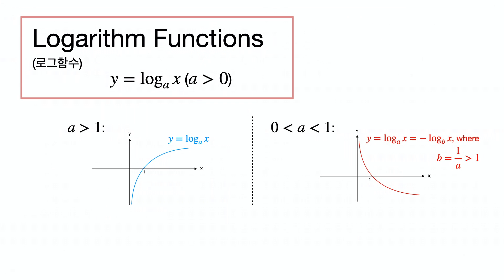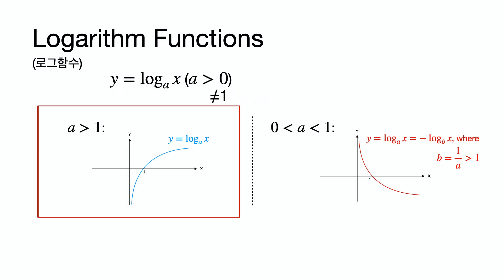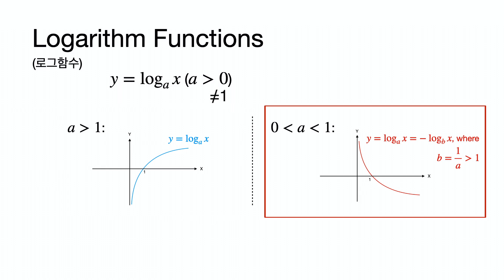A logarithmic function is a function with an equation in log form, where the domain is the argument. The base a must be positive and not equal to 1. If a is greater than 1, the function is increasing. If a is less than 1, the function is decreasing.